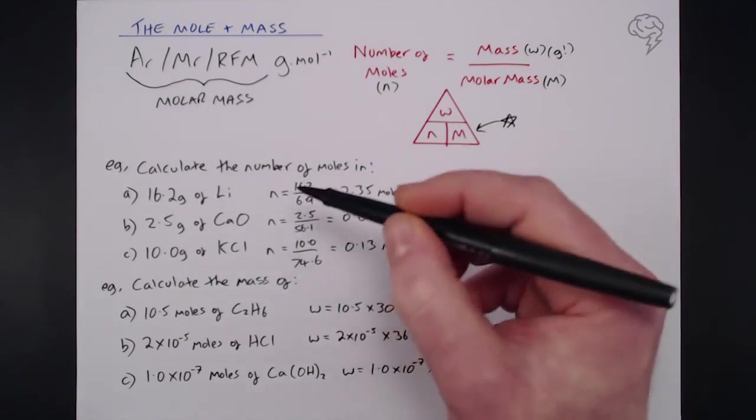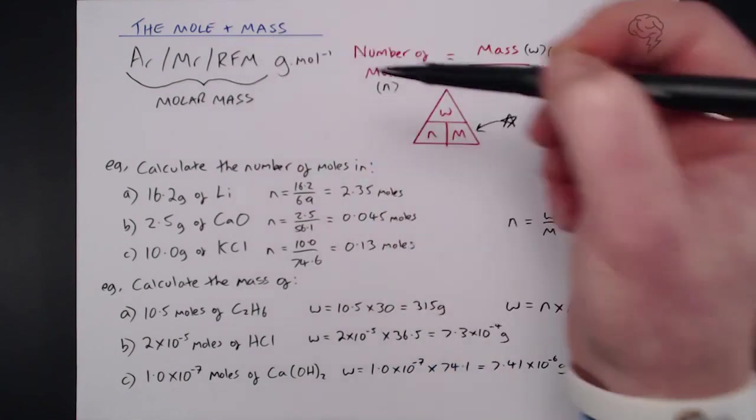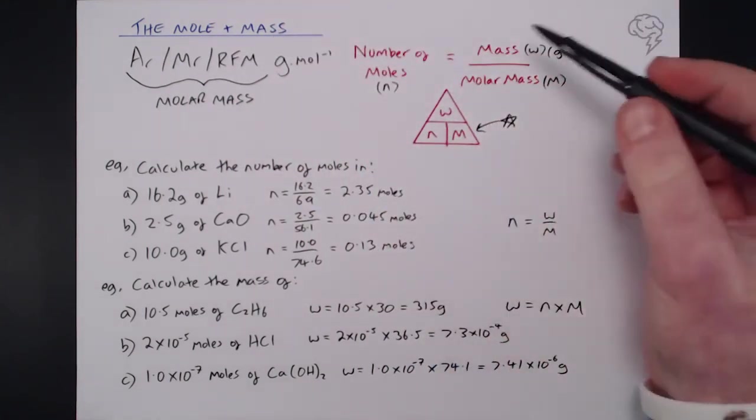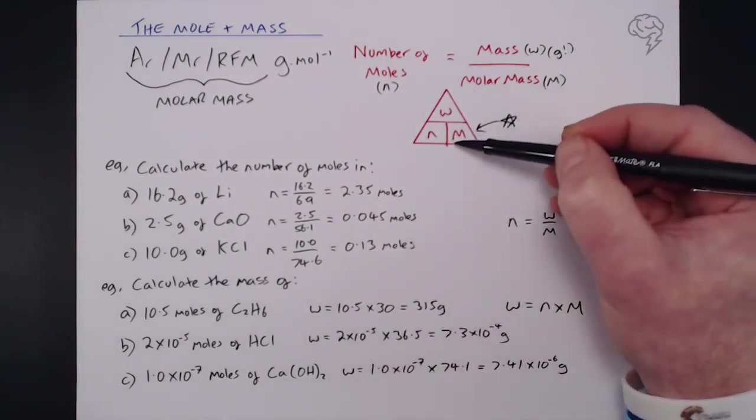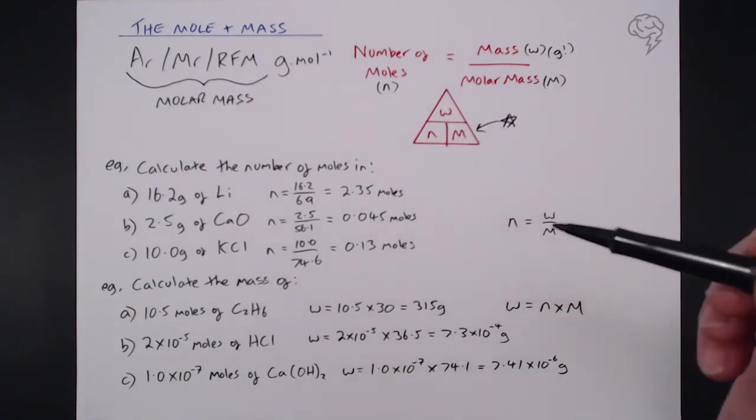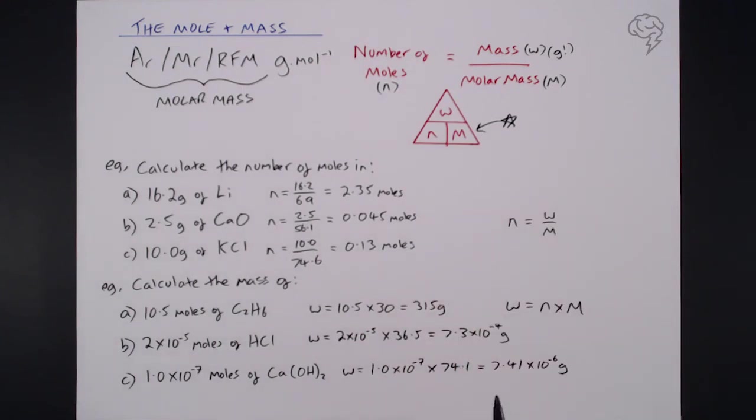So the link between mole and mass is of course our molar mass AR, MR and RFM, and you can use this equation triangle, etch it into your brain, to calculate the number of moles or the mass or indeed sometimes you may need to find the molar mass itself. So this is the first of two massively important equations for you to use in your A-level chemistry questions.